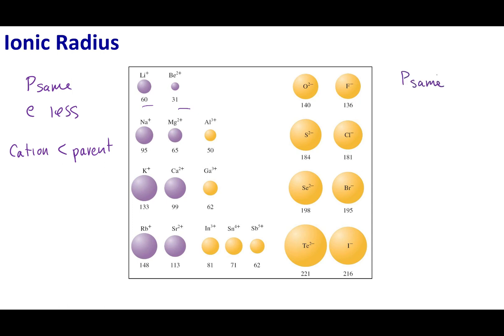For anions, the protons are the same, but I have more electrons. These protons have more electrons that they're trying to pull in, so it's harder for those protons to pull in so many electrons. In this case, the anions tend to be bigger than the parent atom that they come from.